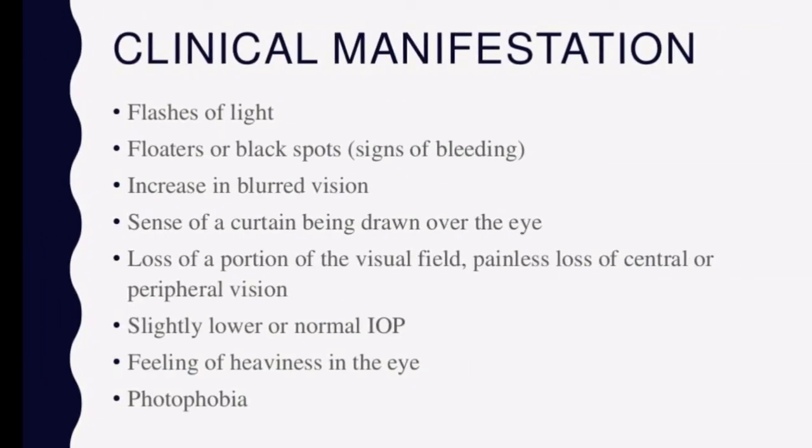Now comes clinical manifestation. The patient sees flashes of light and floaters — black spots. There may be signs of bleeding. The patient feels like there is a curtain over the eye, and this sensation is increasing. Then there is loss of visual field, and intraocular pressure is reduced. There is also heaviness in the eye and photophobia.